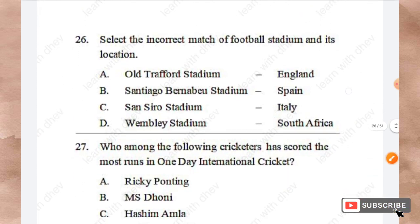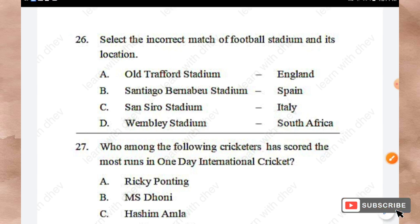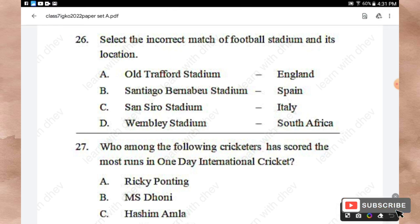Question 26: Select the incorrect match of football stadium and its location. Option A: Old Trafford in England. Option B: Santiago Bernabéu in Spain. Option C: San Siro in Italy. Option D: Wembley Stadium in South Africa. The incorrect match is Option D — Wembley Stadium is not in South Africa.